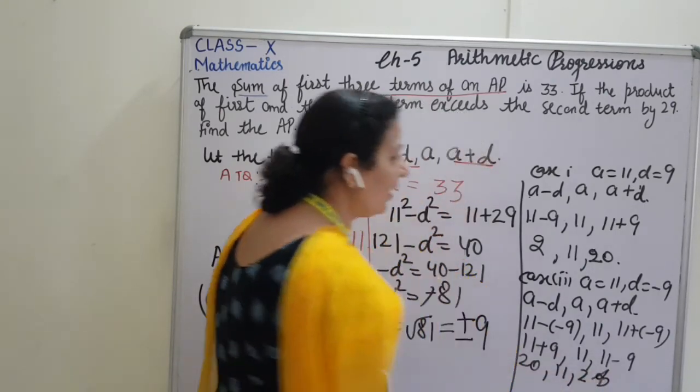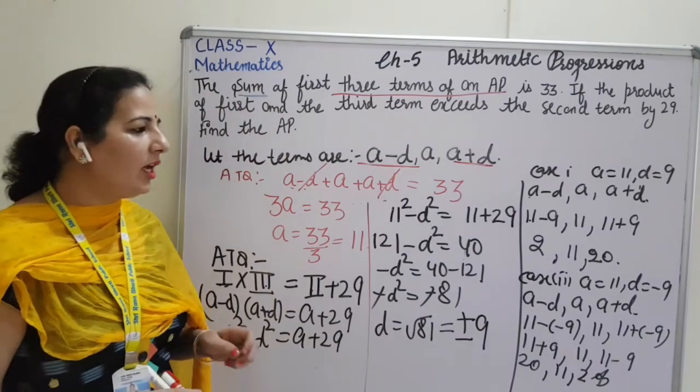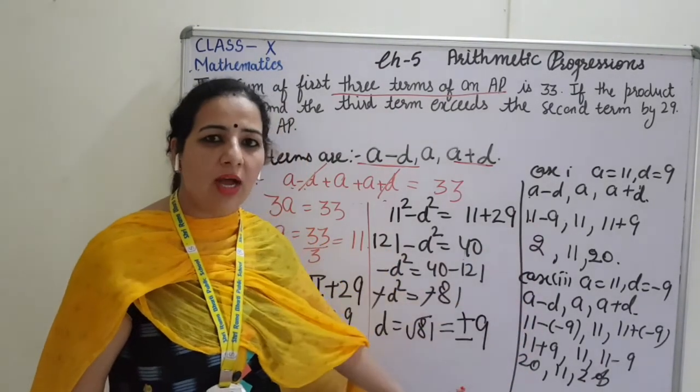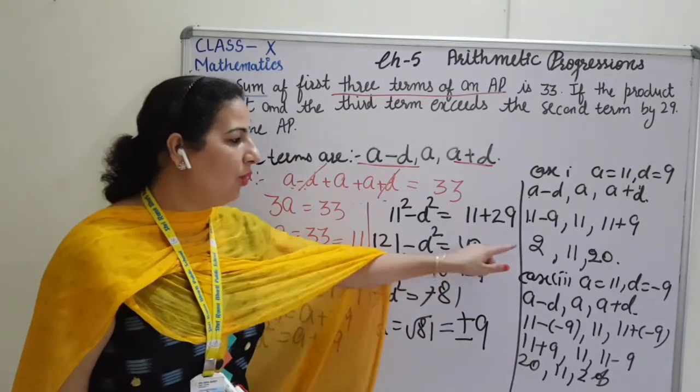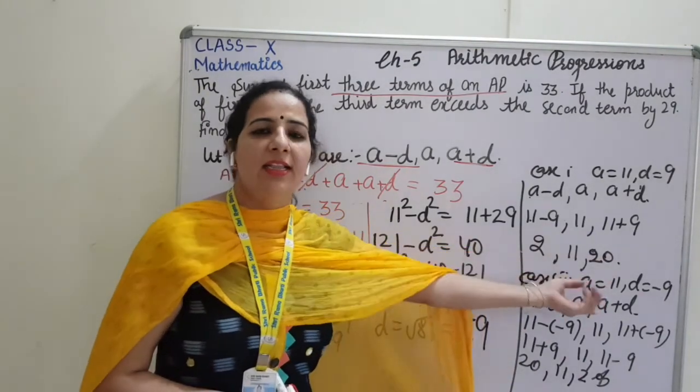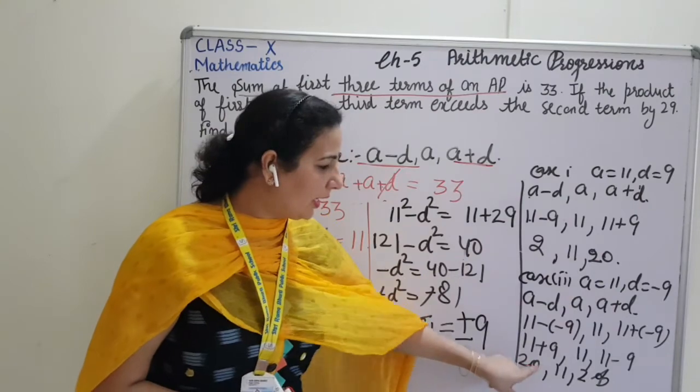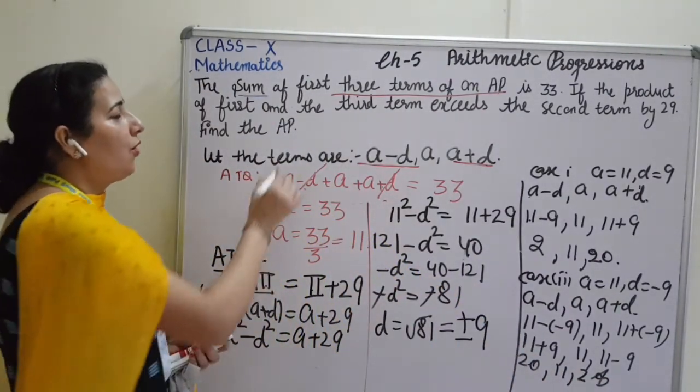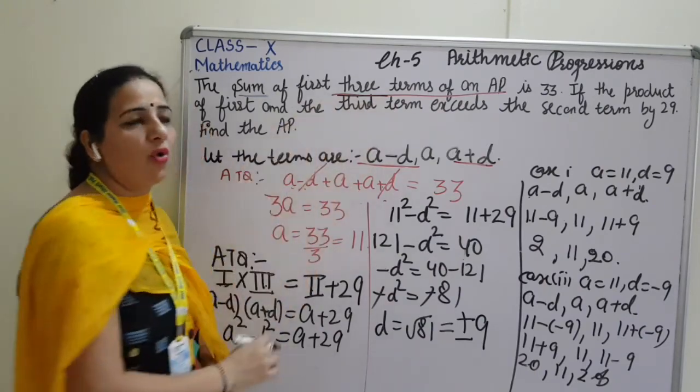So, whenever you get two values of D, no need to calculate all the—no need to create both the cases. What you can do? 2, 11, 20, then the reverse will be 20, 11 and 2. So, this will be the answer for finding the three terms of an AP.